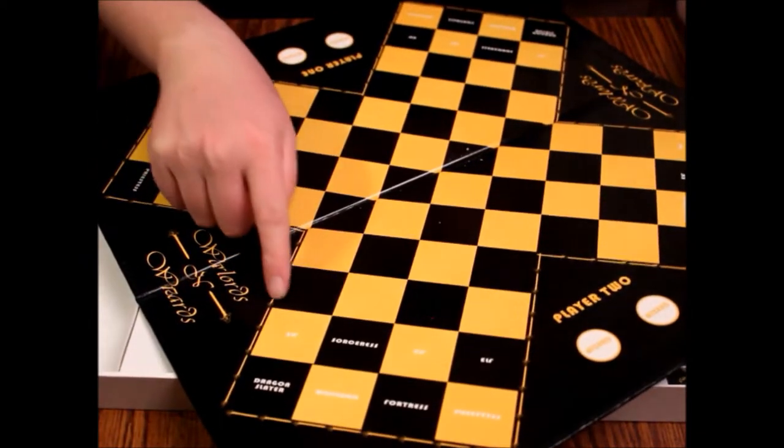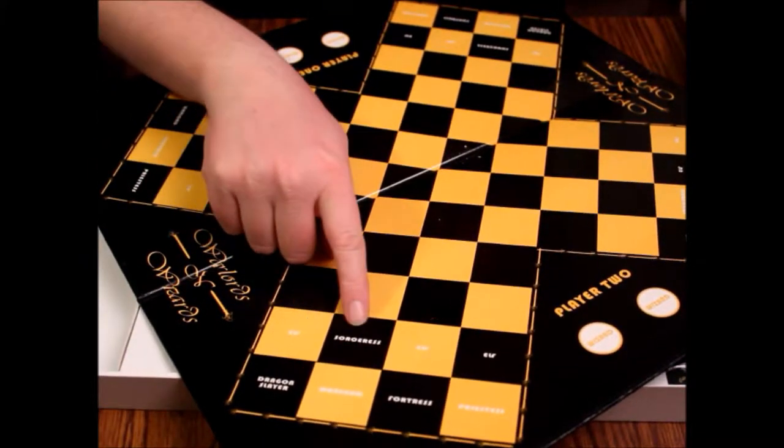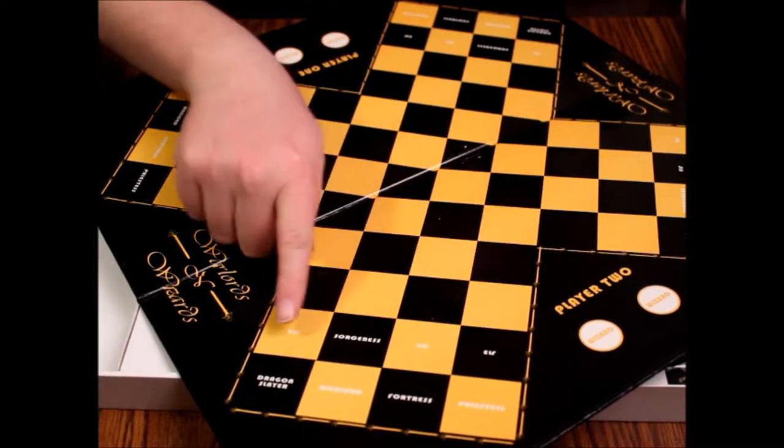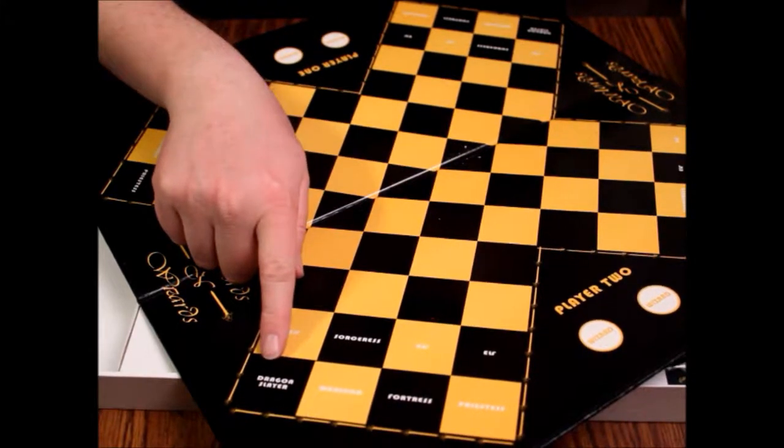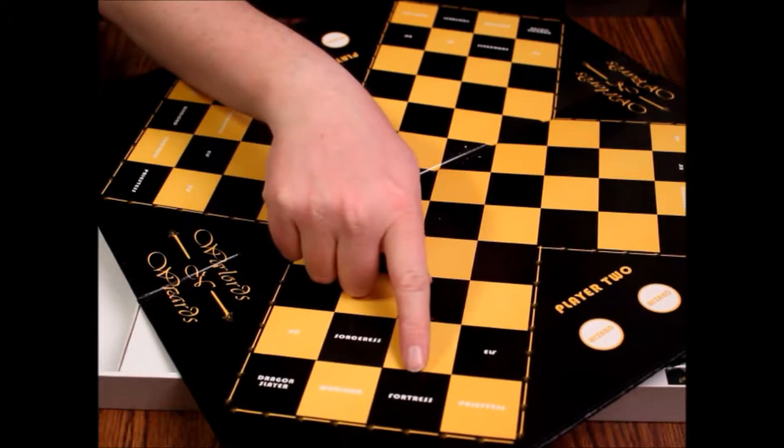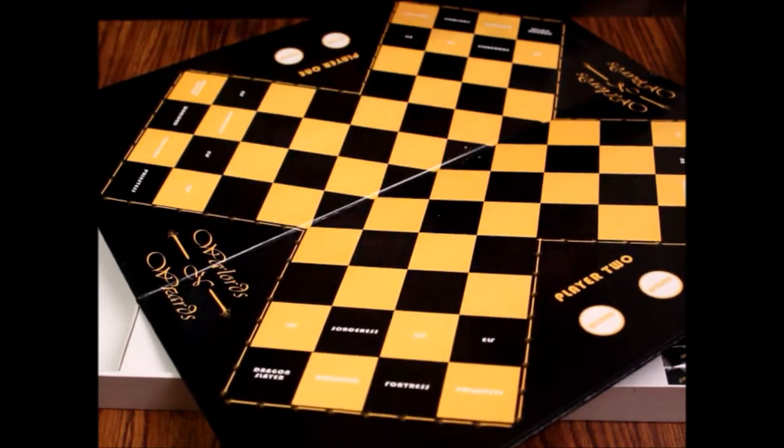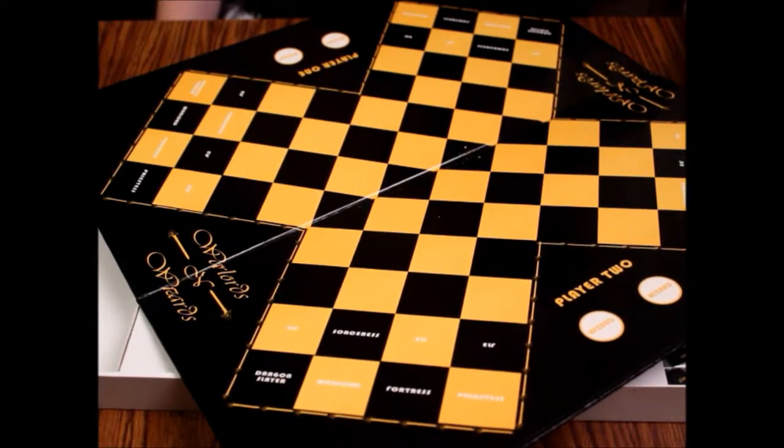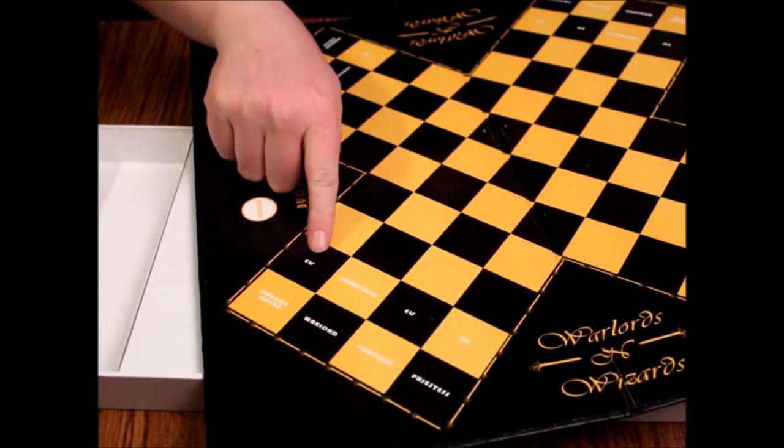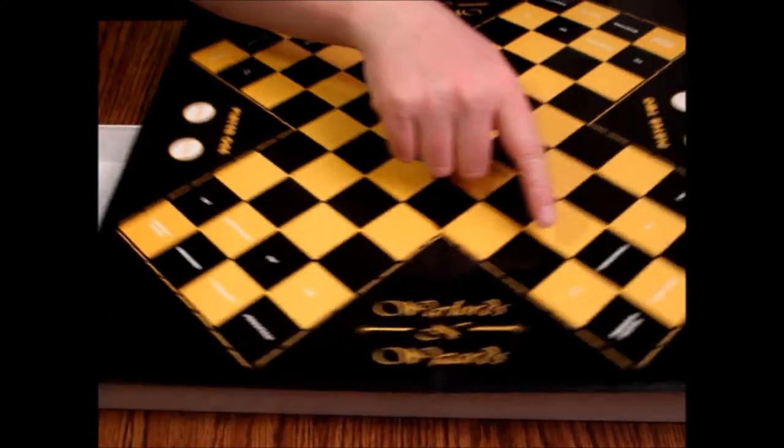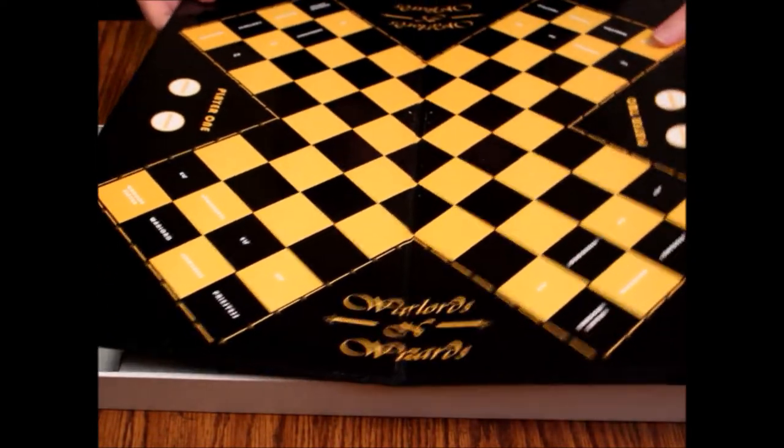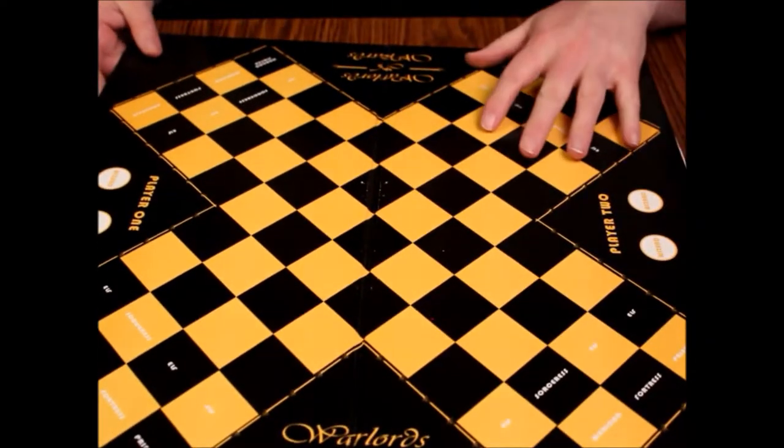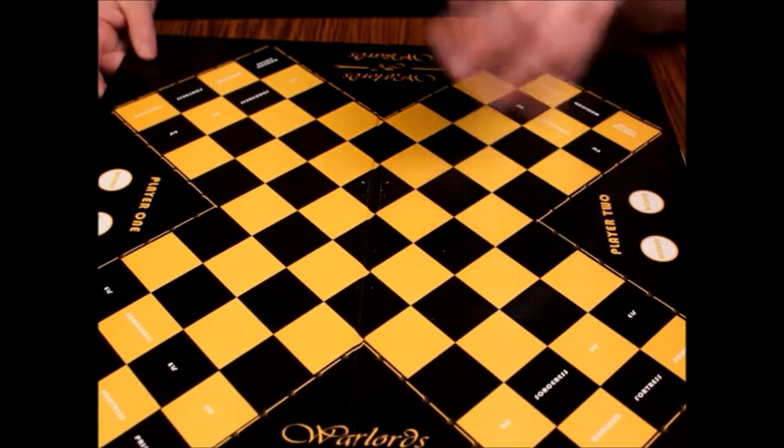Basically you have wizards on one side on these circles and wizard on player two side. And then in the squares here we have elf, sorceress, elf, elf, dragon slayer, warlord, fortress, and priestess. It's the same on all of them, they just alternate colors like here's the elf on a black square instead of the orange square.